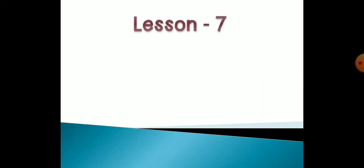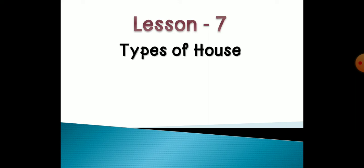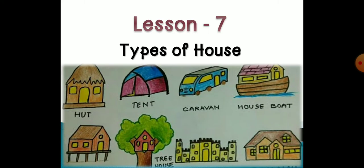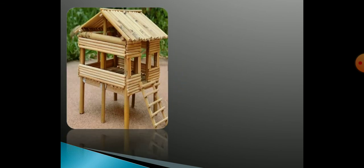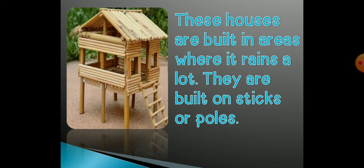Now we will learn Lesson No. 7: Types of a House. This is a picture of a bamboo house. These houses are built in areas where it rains a lot. They are built on sticks or poles. Yahan pe rain yaani baarish zyaada ho aur ye houses sticks aur poles se bane hote hain.